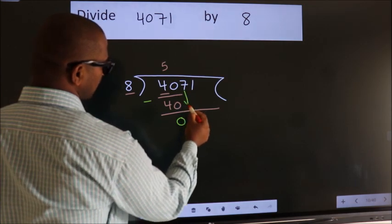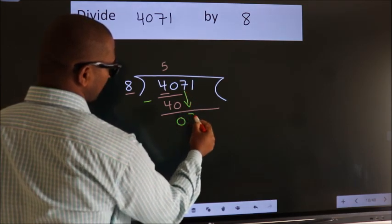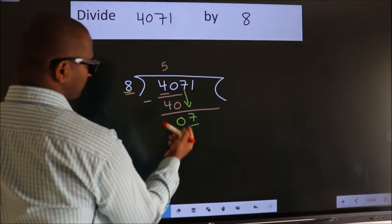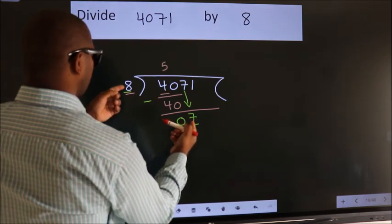After this, bring down the beside number. So, 7 down. Here we have 7, here 8. 7 is smaller than 8.